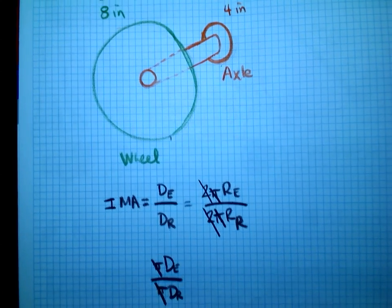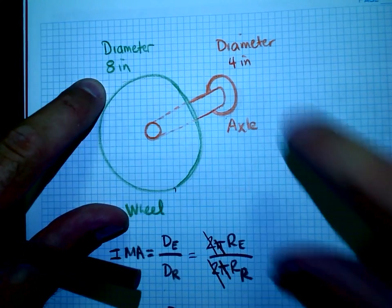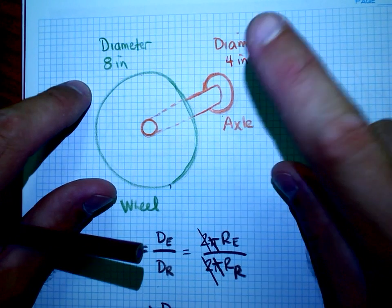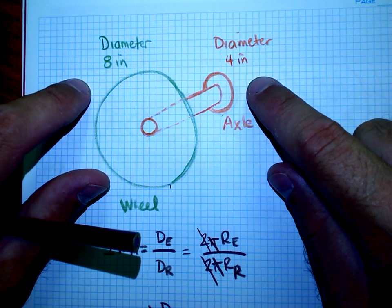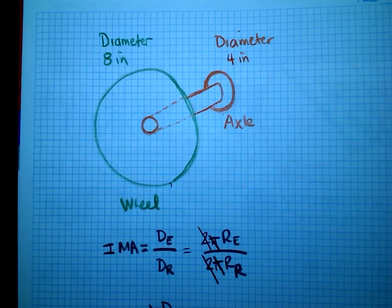And either way, I'm just comparing the dimensions. If I have the diameter here and the diameter here, I can make a comparison. If it was radius and radius, I could still make the same comparison. I'm just going to divide them. So it turns out to be simply this.